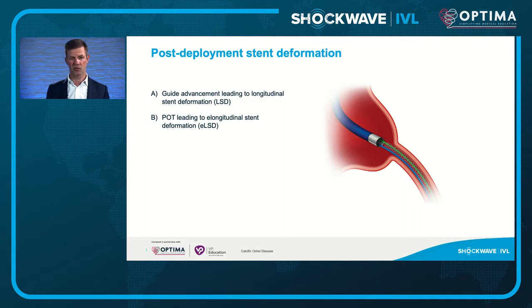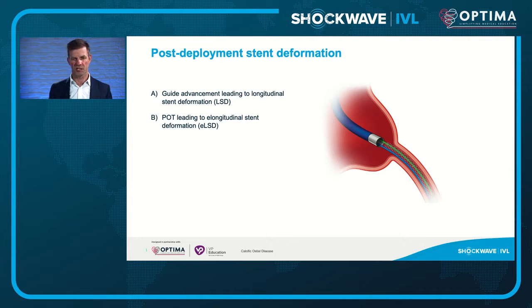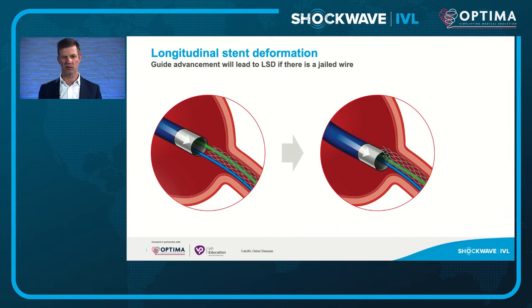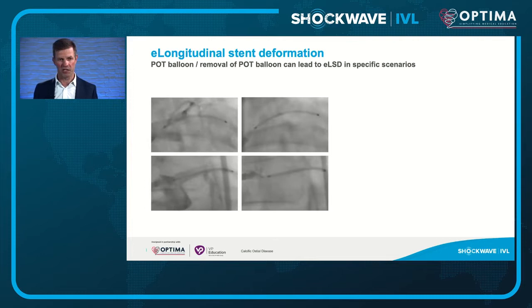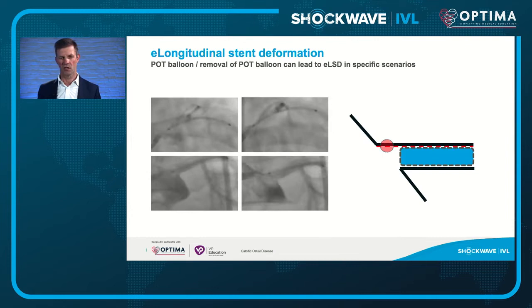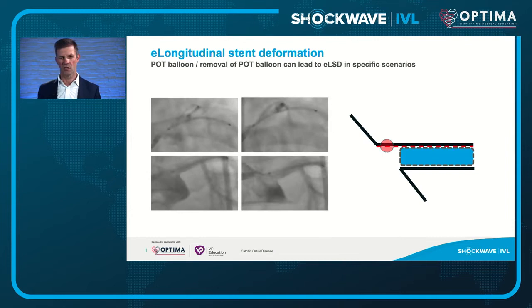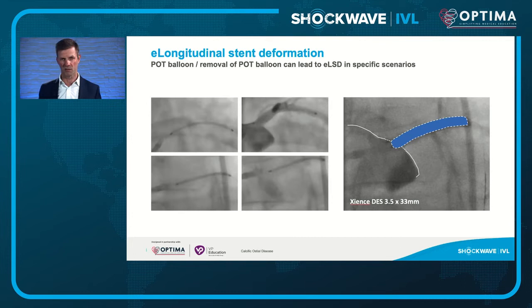When deploying stents, using two wires can commonly cause longitudinal stent deformation. With more imaging and stent length measurement, we're seeing elongation of stents with POT. In a left main example with two wires deployed on one and a jailed circumflex, pulling that out can deform and compress the aorto-ostium. Here you can see a left main LAD stent being deployed carefully, targeting the aorto-osteal landing zone — a 3.5 by 33 millimeter stent.